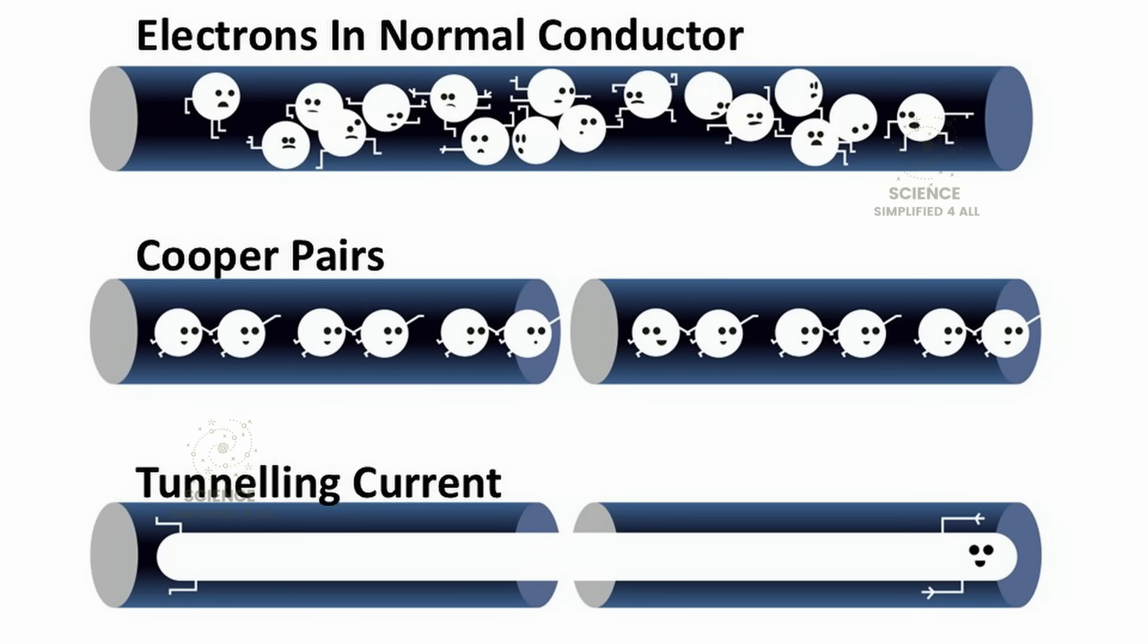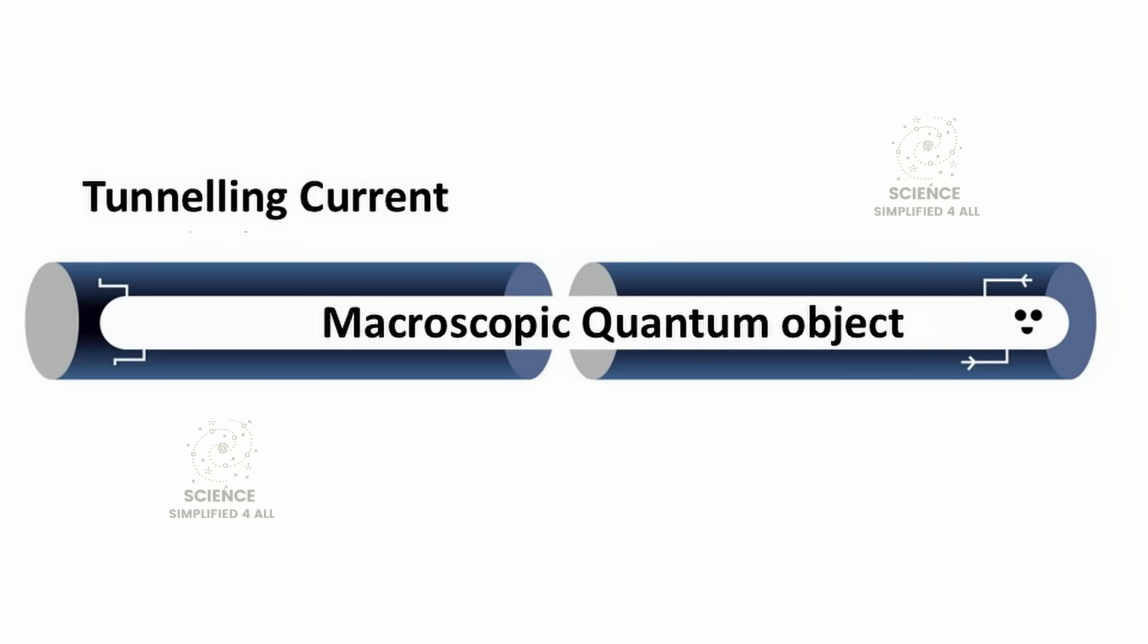John Clarke, Michel Devoret, and John Martinis discovered methods to control, manipulate, and measure the superconducting current flowing through the two circuits of a Josephson junction. When they did this, they found that the current behaved like a macroscopic quantum object.